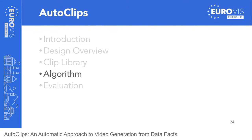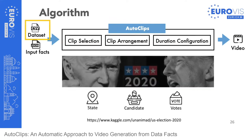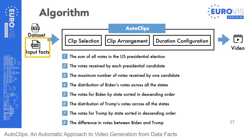The AutoClips workflow consists of three steps: clip selection, clip arrangement, and duration configuration. To better explain the algorithm, we use a story about the US presidential election as a running example. The dataset presents the number of votes each presidential candidate received in different states. The data story contains eight data facts: the sum of all votes, distribution of votes per candidate, Biden's maximum votes, distribution of Biden's votes across states, Biden's votes by state sorted descending, Trump's votes across states, Trump's votes by state sorted descending, and the difference in votes between the two candidates.